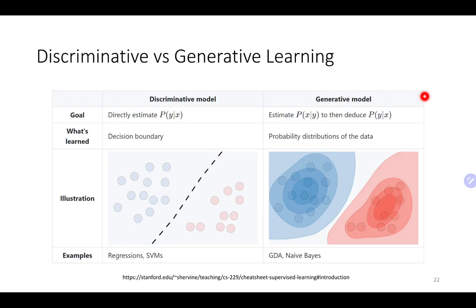Discriminative and generative models: the discriminative model tries to learn a boundary between two classes. What it tries to learn is P(Y|X). Pretty much regression models, SVM models, logistic regression, and neural network models try to do this. The generative model is different — it looks at the data and fits distributions on the different classes. From those distributions it creates a boundary. The generative model is more complex because it first learns P(X|Y) — the distribution for each class — and then derives P(Y|X).